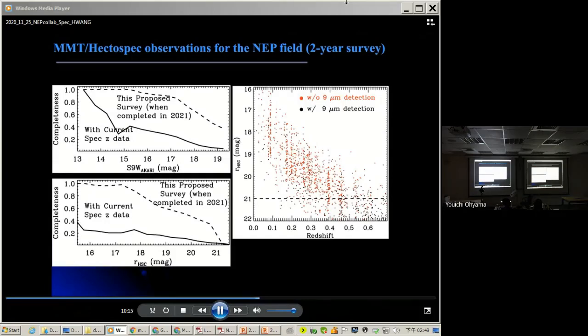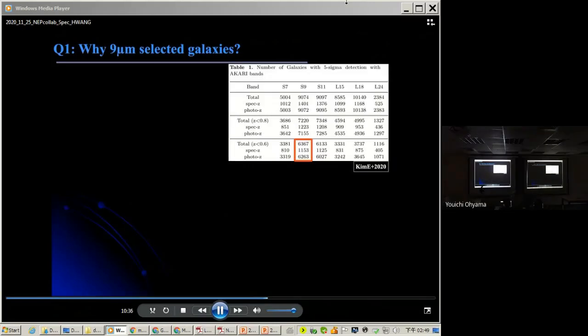And this plot shows the R-band magnitude as a function of the redshifts. As you can see, the galaxies that we are going to observe, most of them, their redshifts are smaller than 0.6. So this is the redshift part that we are going to study. We are going to focus on the galaxies at intermediate redshifts.